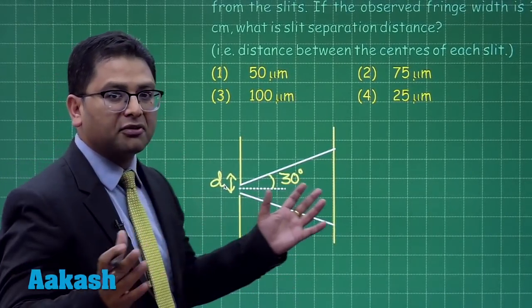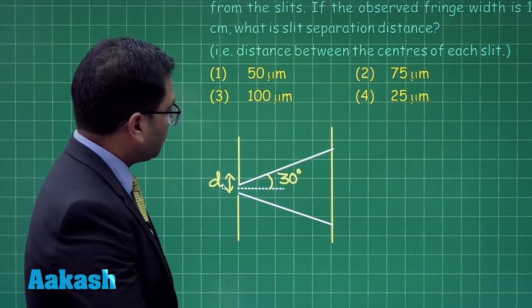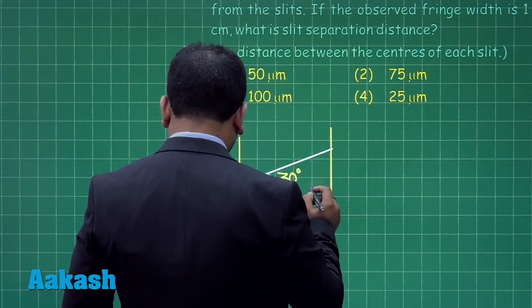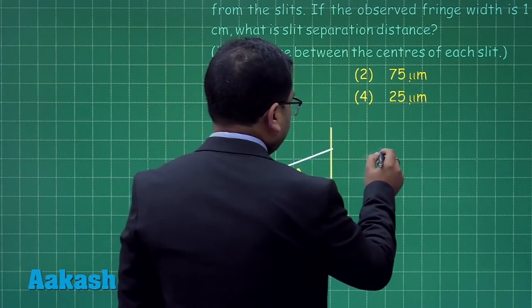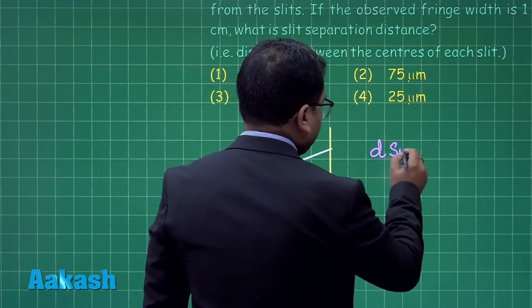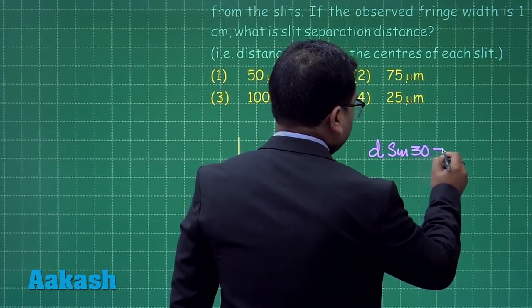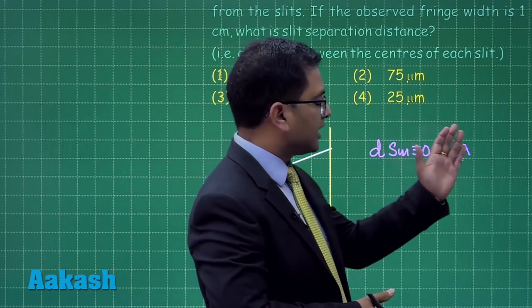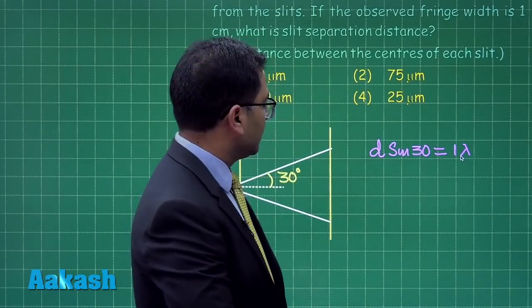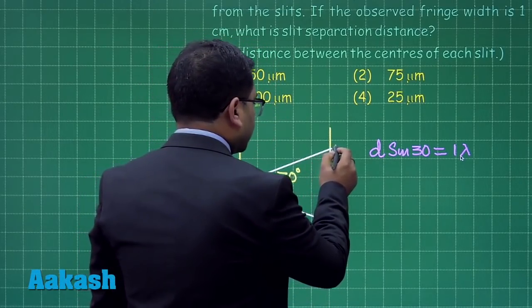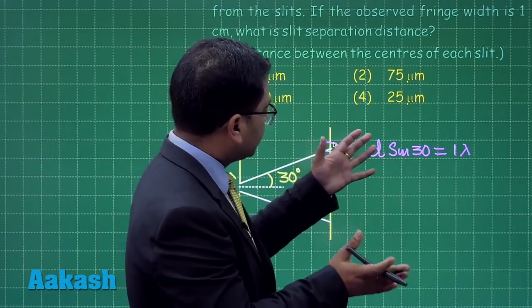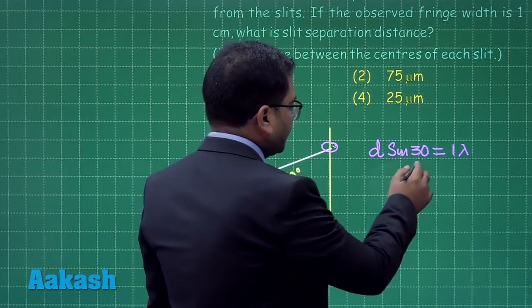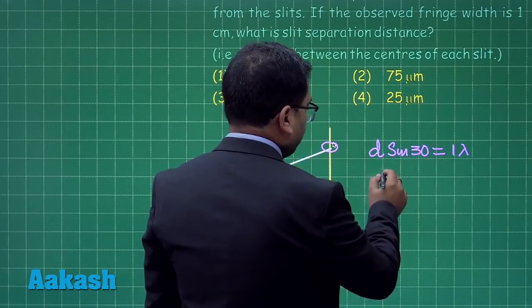Here the width of the slit, let me call this particular width to be d, the regular notation. Now the information that we can draw is d sin 30° = 1λ. I directly wrote it, d sin θ = 1λ is the position of the first minimum. In other words, we are trying to see the width of the central maximum here.